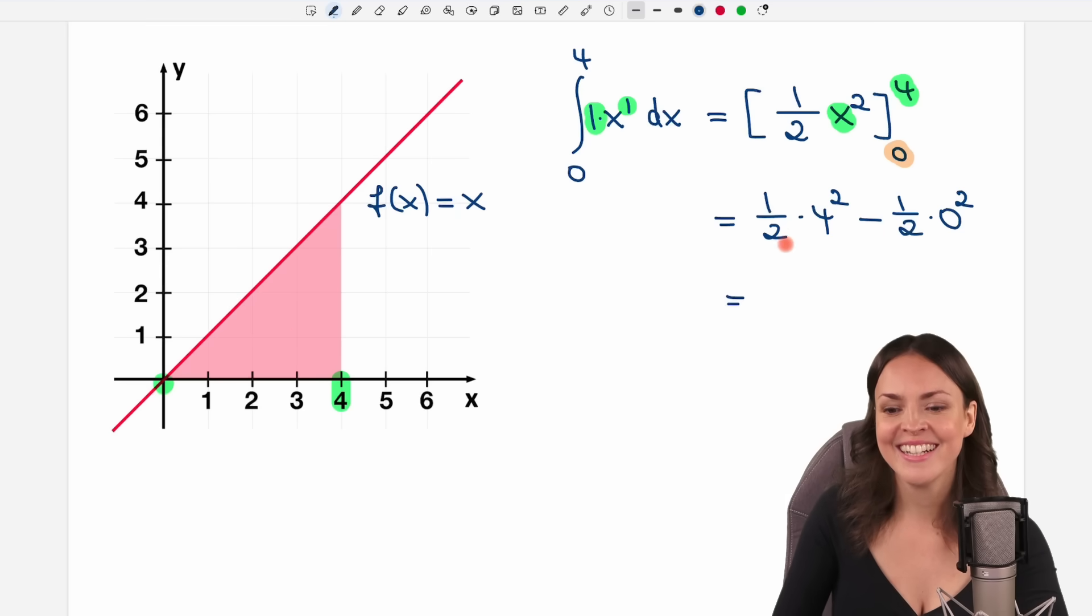Now we only have to calculate this and hope that we get the same result as we've just got with a triangle. So 4 squared equals 16, 16 over 2 equals 8 minus, and this part equals 0, so we don't have to subtract anything. 8 is our area here.